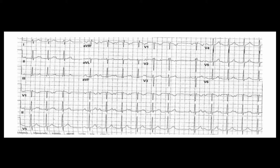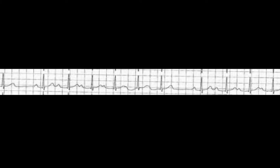In this ECG, the RR interval appears irregular, the QRS is narrow and under three squares, and the axis is normal with lead one and AVF both positive. The difficulty here is finding your P waves. It is a good idea to find two clear P waves and then work backwards and forwards to identify the others. Looking at the enlarged rhythm strip: the PR interval is normal on the first beat, but on the next beat it has extended, and continuing that pattern the PR interval continues to extend. Later in that cycle, the P wave is hidden within the T wave.